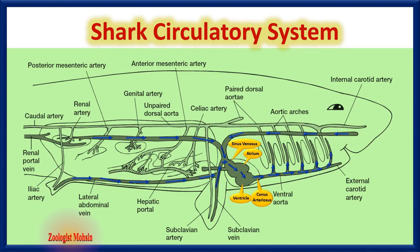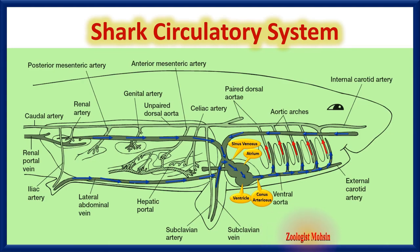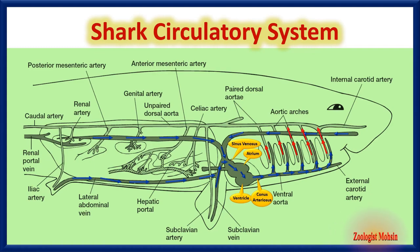From the conus arteriosus, deoxygenated blood enters the ventral aorta and is pushed toward the gills. There are five pairs of gill slits in fishes. From an evolutionary point of view, these gills are provided with an extensive network of capillaries for gaseous exchange. When blood enters these capillaries, carbon dioxide diffuses out and oxygen diffuses in due to concentration gradients.